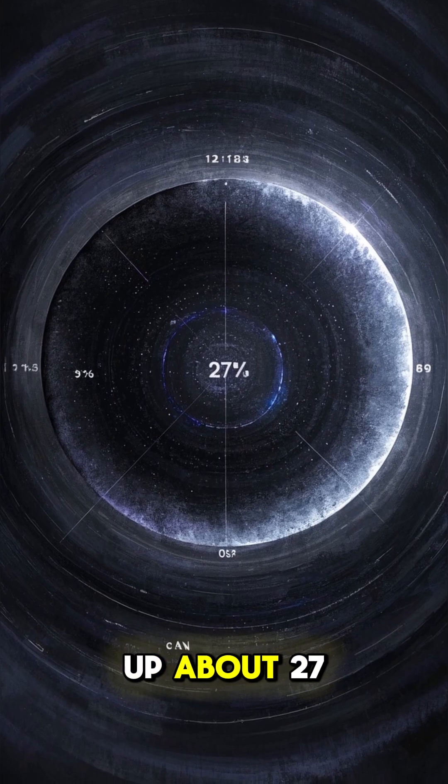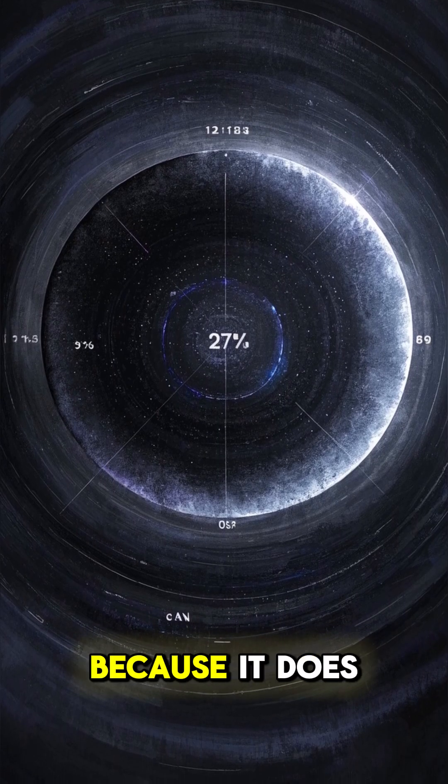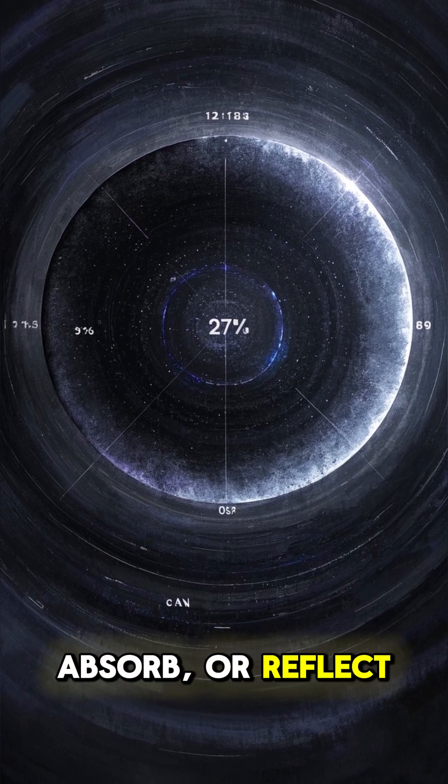Dark matter makes up about 27% of the universe, yet it cannot be seen directly because it does not emit, absorb, or reflect light.